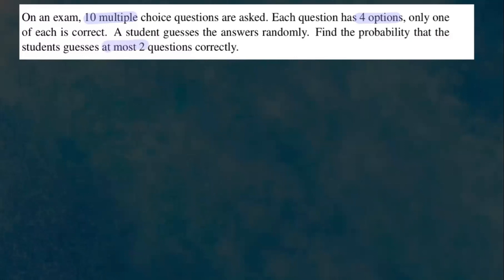This is a binomial probability problem. So we're going to go ahead and write down the following components. For binomial probability, we use the formula: probability that X is equal to x equals n choose x, times p to the power of x, times q to the power of n minus x.